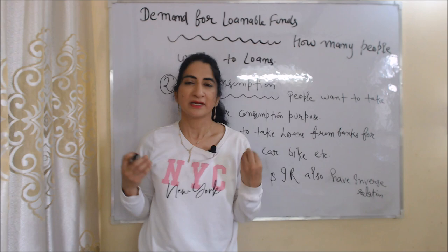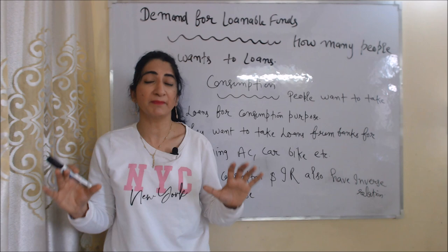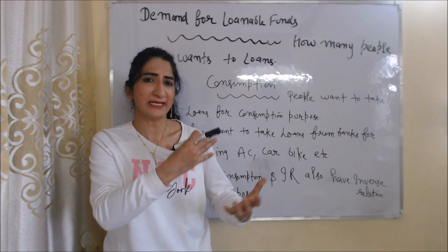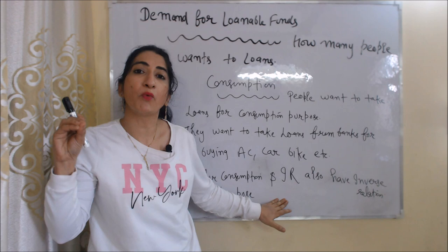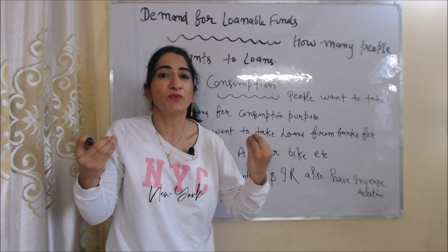The next factor is consumption. People also want to take loans from banks for consumption purposes — many people buy things on credit, taking loans for buying a car, mobile, AC, etc. Loans for consumption purposes and interest rate also have an inverse relation. When interest rate is very high, people will take less loans for consumption. On the other hand, when interest rate is very low, people will take more loans for consumption.